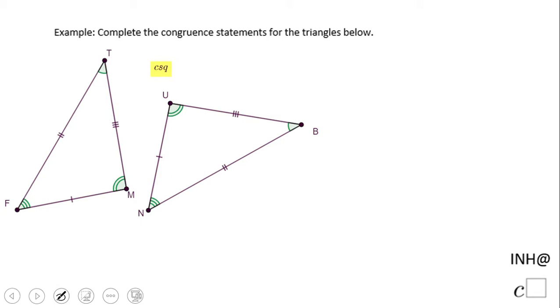Notice for instance that UN and FM are congruent. Why? Because they have the same mark on the sides. I can write this UN congruent with FM. Does the order matter here? Not really. In this congruent statement it does not.